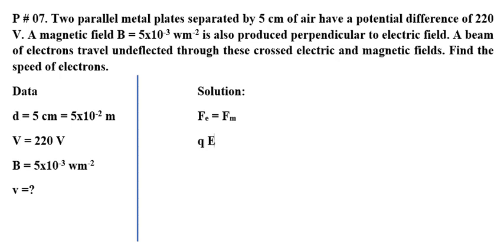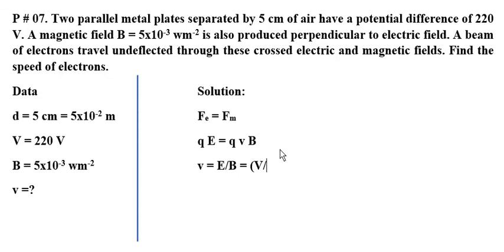Electric field का force QE के equal होता है. Magnetic field का force QVB sin theta होता है. sin theta यहां पे नहीं होगा क्योंके perpendicular है. तो यहां पे अगर आप दोनों side पे देखें QQ cancel हो जाएगा. तो V की value हमारे पास मिल रही होगी: V equal to E over B. यहां पे electric field की value मिलेगी voltage divided by D से.